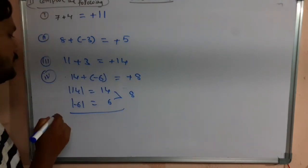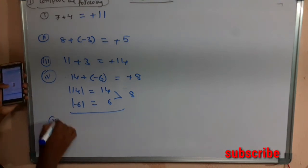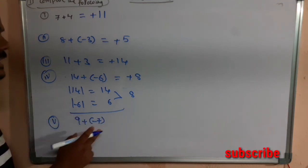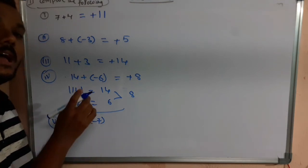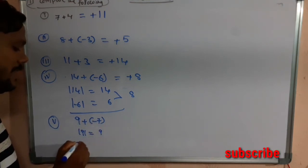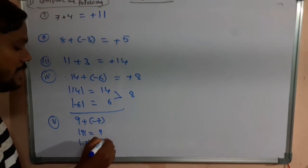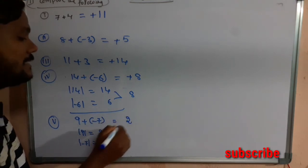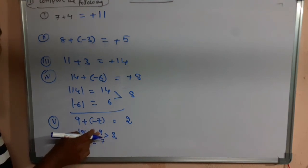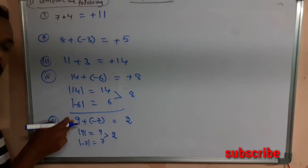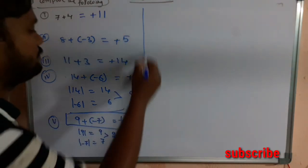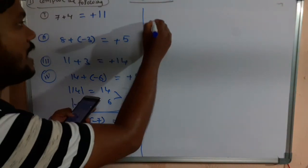The fifth question is 9 + (-7). These two are unlike integers, so take the absolute values. Absolute value of 9 is 9, absolute value of -7 is 7. The difference is 2. The number with the greater absolute value is 9, which is positive, so the answer is +2.